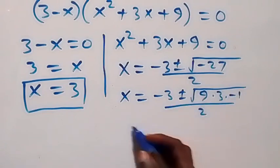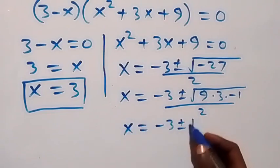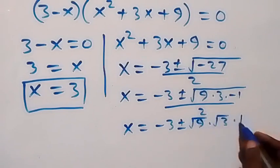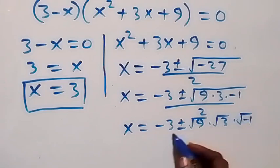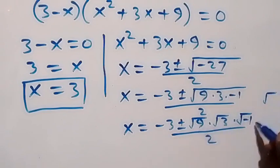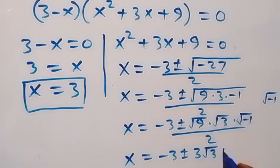And here it implies that we have x equals minus 3 plus or minus — taking the square root of 9 gives 3, and square root of minus 1 is i — so x equals minus 3 plus or minus 3i√3, over 2.